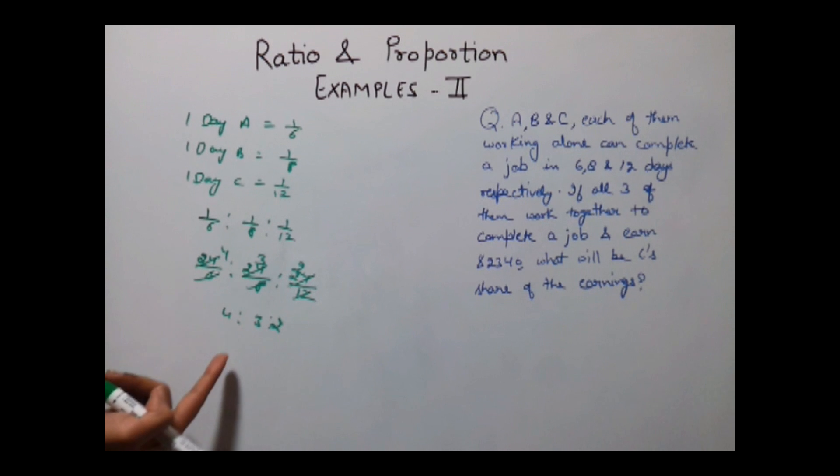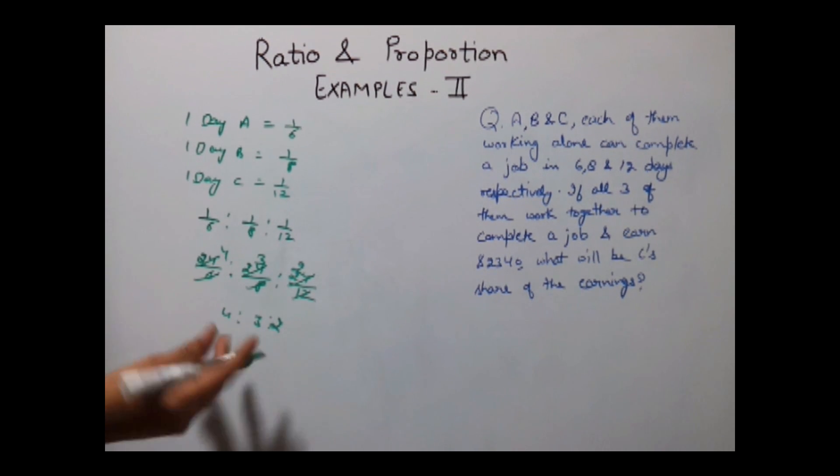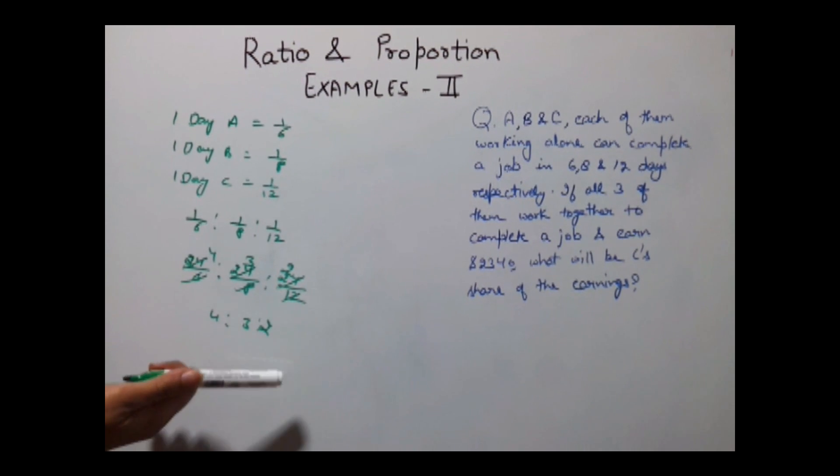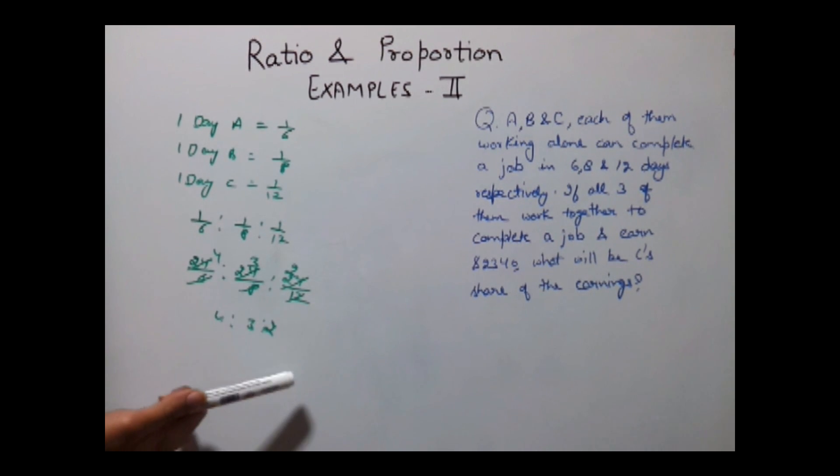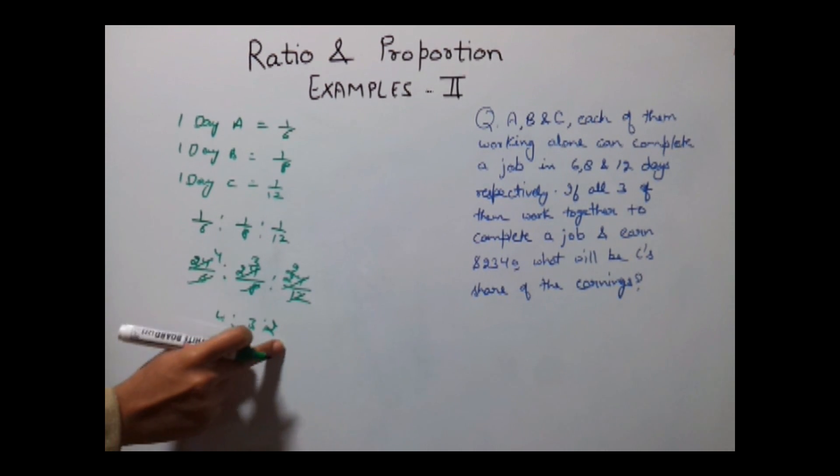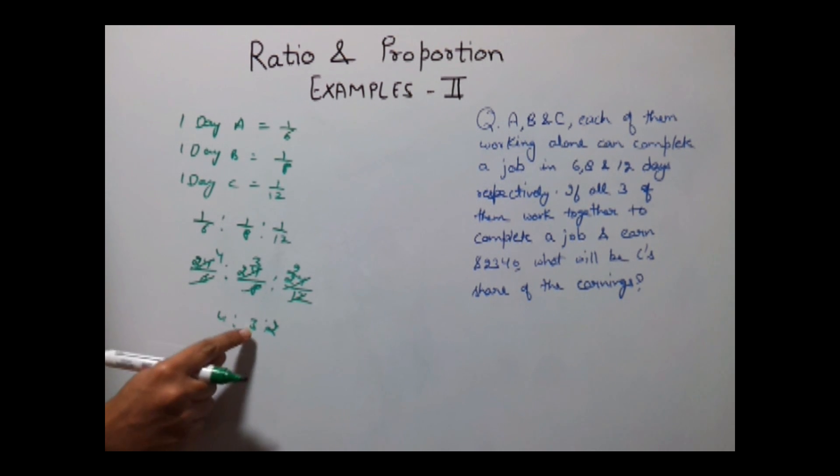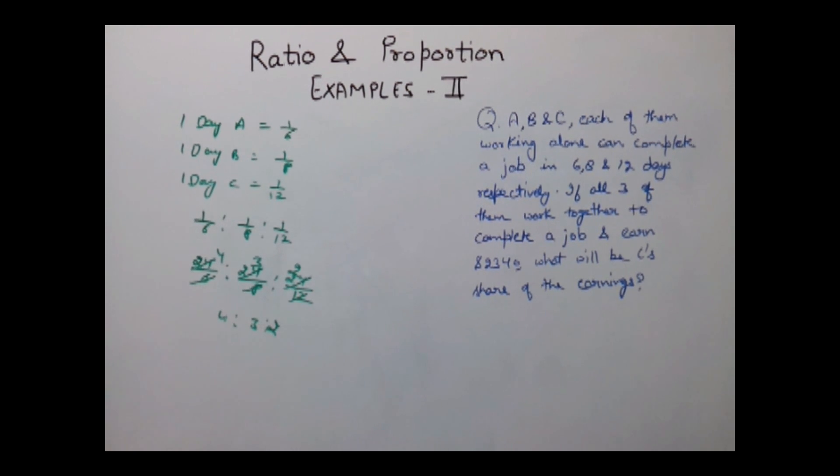So this becomes the ratio of their work, that is how much they work in a single day, and their earning is dependent on this ratio only. And we need to find out what was the earning of C's part which is 2.